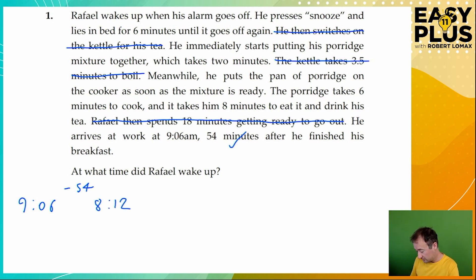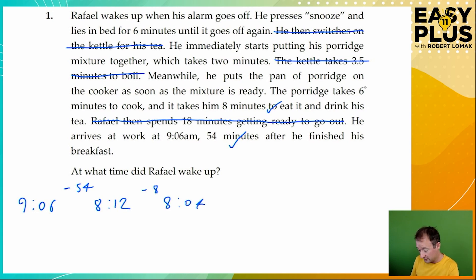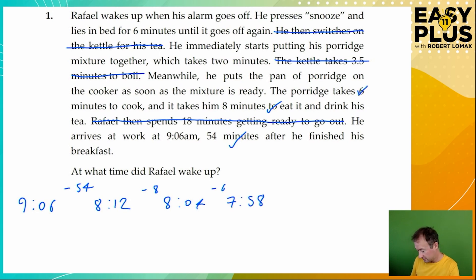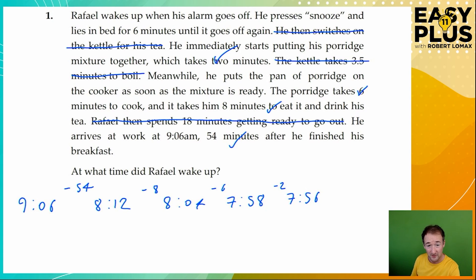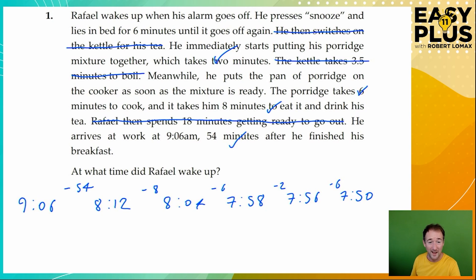It takes him eight minutes to eat his porridge and drink his tea, six minutes to cook his porridge, two minutes to put his porridge mixture together, and he lay in bed for six minutes before this. And there we have it — Raphael woke up at 7:50, or ten to eight in the morning.